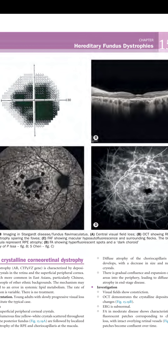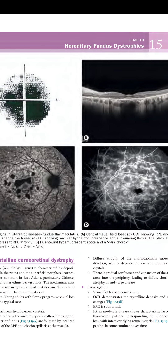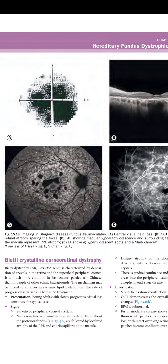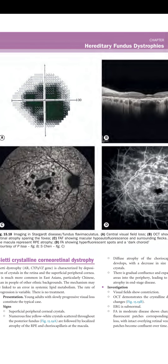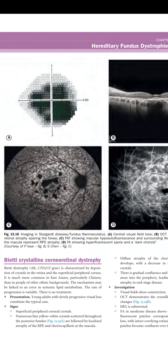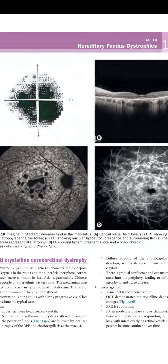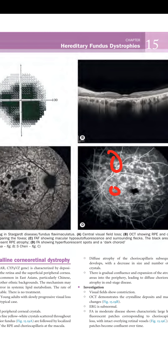Imaging in Stargardt disease or fundus flavimaculatus: (a) shows central visual field loss; (b) OCT showing RPE and outer retinal atrophy sparing the fovea; (c) FAF showing macular hypo-autofluorescence and surrounding flecks — the black areas in the macula represent RPE atrophy; (d) FFA showing hyper-fluorescent spots and a dark choroid.